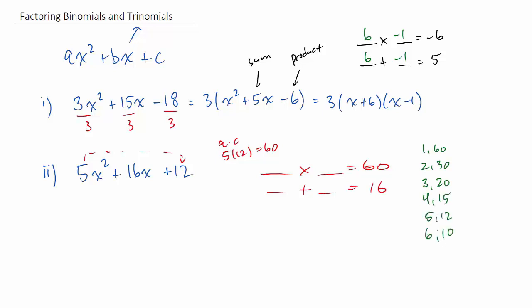So in green there, I'm listing out all the factors of 60, and then I'm going to choose 6 and 10. That's the only pair that would work. What we do with those is we break the 16 apart into 10x and 6x.